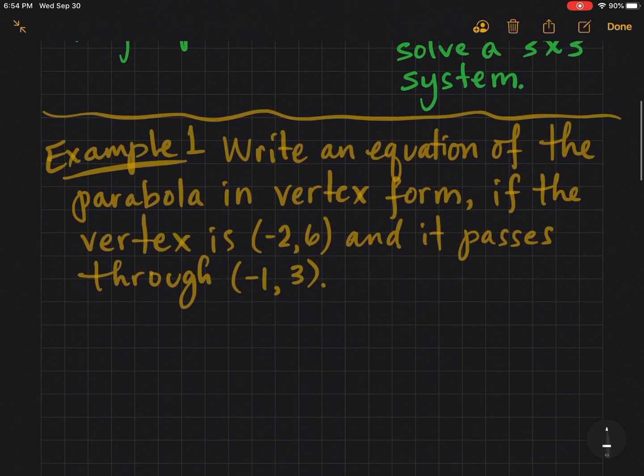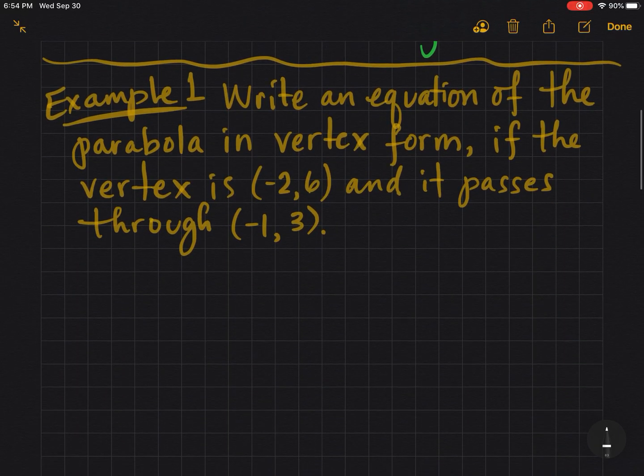Example 1: Write an equation of a parabola in vertex form if the vertex is (-2, 6) and it passes through (-1, 3). Since we know the vertex and one point, we're going to use vertex form.